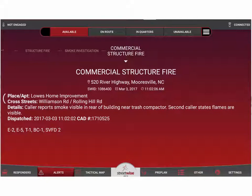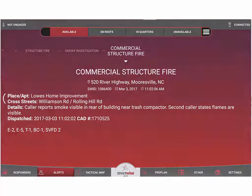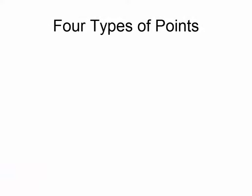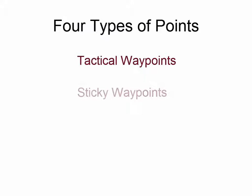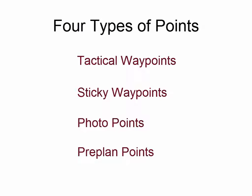Welcome aboard. In this video tutorial we're going to be explaining how to work with location items or points on your tactical map. There are actually four types of points that may appear on your map: tactical waypoints, sticky waypoints, photo points, and pre-planned points. We're going to talk about photo points and pre-planned points in a different video tutorial.